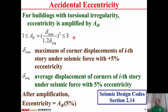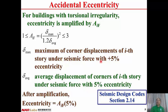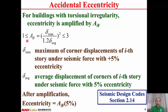If the building is so irregular, the accidental eccentricity may be amplified by Aif. Aif equals delta maximum divided by (1.2 times delta average), squared. Delta maximum is the maximum corner displacement of the i-th floor under seismic force with plus 5% eccentricity. Delta average is the average displacement of all corners of the i-th floor under seismic force with plus 5% eccentricity. After amplification, eccentricity equals Aif times 5%, so minimum eccentricity is 5% and maximum eccentricity is 15%.